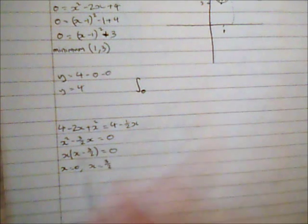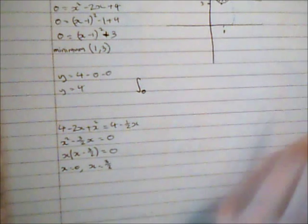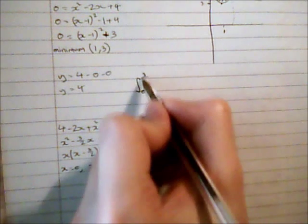So x equals zero was this limit here which I knew. And now I know that I've got 3 over 2 as my other limit.